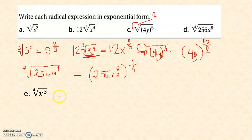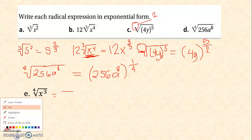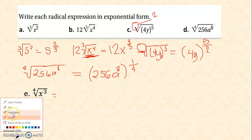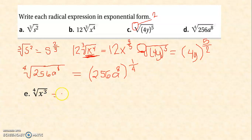How about the fourth root of x raised to 3? Your radicand is x, so that will become your base. Your exponent here is 3, therefore 3 will be written on the numerator. And your index is 4, so 4 will be written as the denominator. You get x raised to 3 over 4.